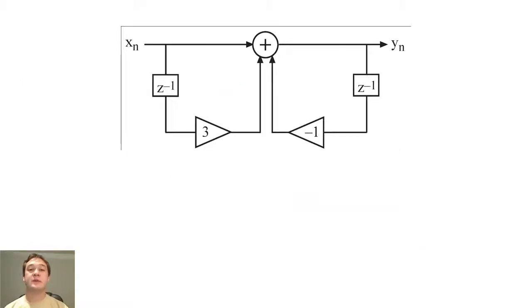The unit pulse response is the output of the system when the input is a Kronecker delta function, or unit pulse.